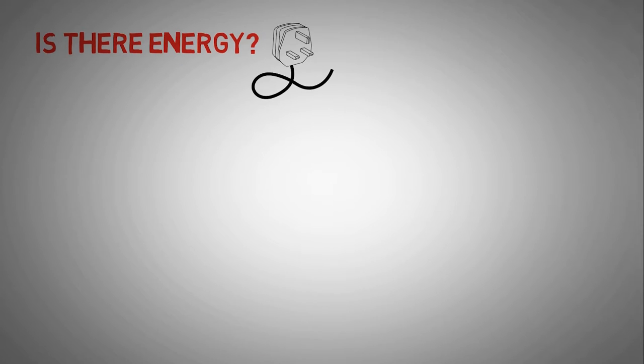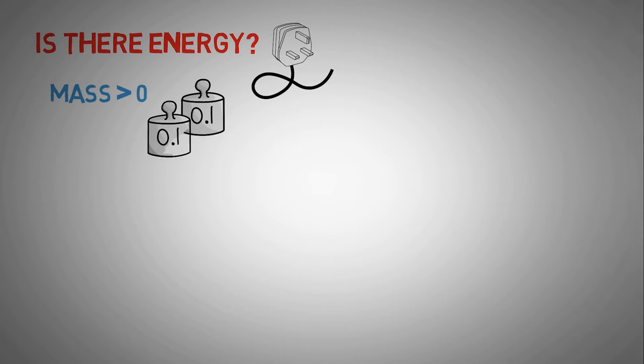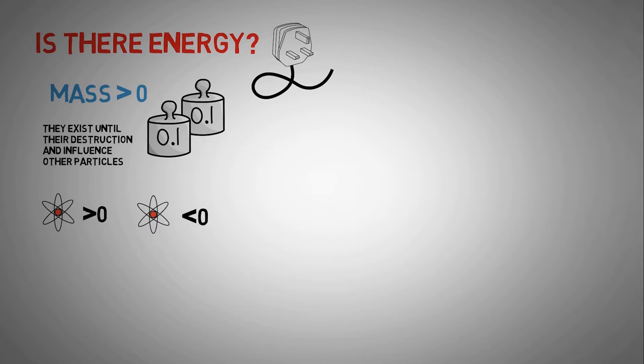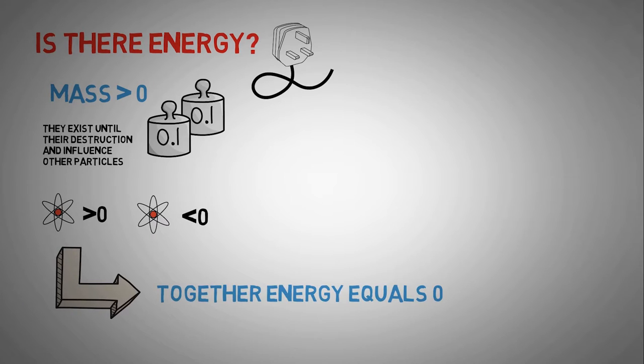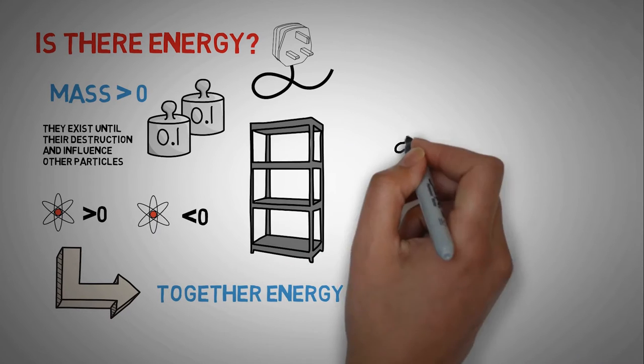But there's also another interesting effect. Since energy cannot be created out of nowhere, those two particles together must have a total energy of zero. Wait, there are two particles, and there's no energy. Well, not completely. Both of those particles have a positive amount of mass and exist until their destruction. But only one of them has a positive energy, while the other one has a negative. Together, they add up to zero. So from their appearance to their destruction, the law of conservation of energy is not broken.